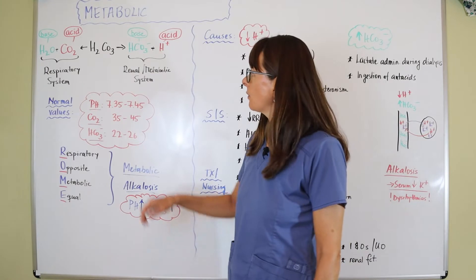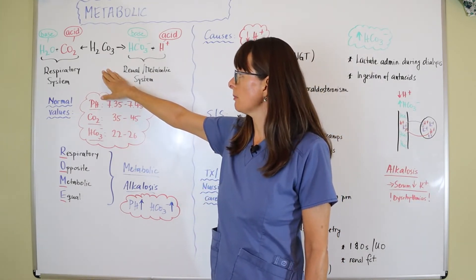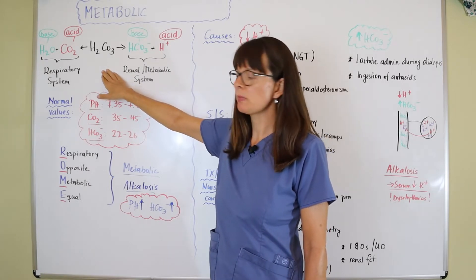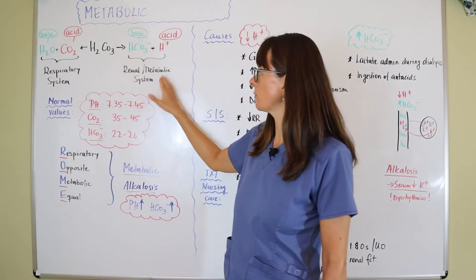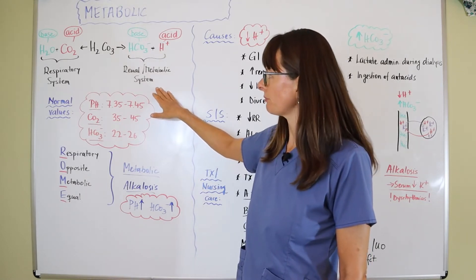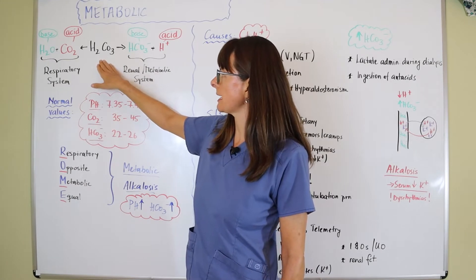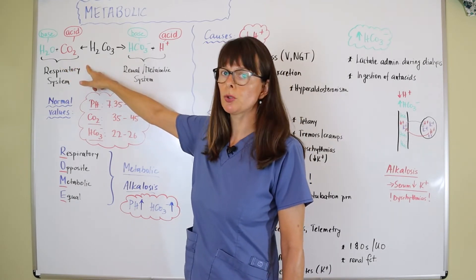In general, our body produces carbonic acid, which is H2CO3, and it can be broken down and excreted by either the respiratory or the renal system, sometimes called the metabolic system.